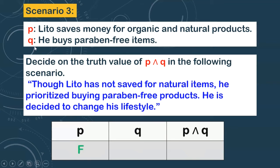What about Q? Go back to proposition Q: 'Lito buys paraben-free items.' Did Lito buy paraben-free items? Yes — 'He prioritized buying paraben-free products.' So the truth value of Q is true. What is the combination? What is the truth value of P and Q? Since there is one false value, this is automatically false. That is the truth value of P and Q given this scenario.